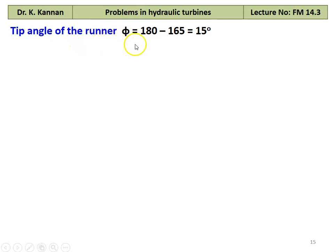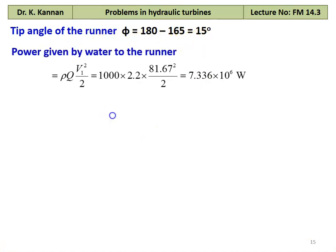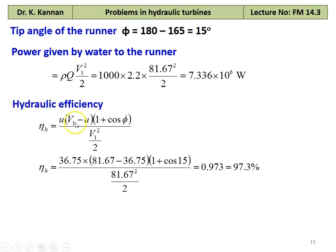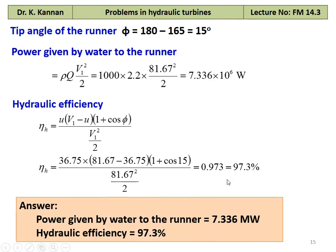Bucket tip angle φ = 180° − 165° = 15°. Power given by water to the runner = ρQ × V1²/2 = 1000 × 2.2 × 81.67² / 2 = 7.336 × 10⁶ W = 7.336 MW. Hydraulic efficiency ηH = U(V1 − U)(1 + cos φ) / (V1²/2) = 36.75 × (81.67 − 36.75) × (1 + cos 15°) / (81.67²/2) = 0.973 = 97.3%. Answer: Power = 7.336 MW, hydraulic efficiency = 97.3%.